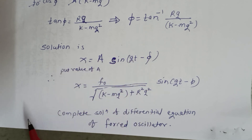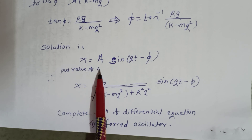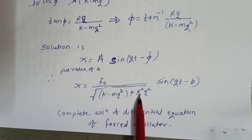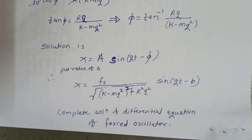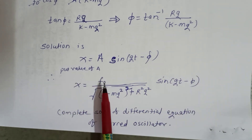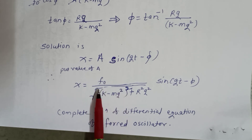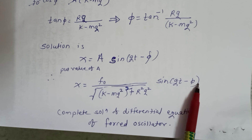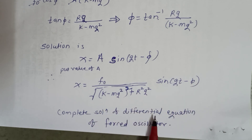The particular integral solution is x = A·sin(Qt − φ). Substituting the value of A, the complete steady state solution is: x = [F₀ / √((K − MQ²)² + R²·Q²)]·sin(Qt − φ). This is the complete solution of the differential equation of the forced oscillator.